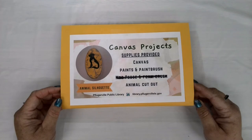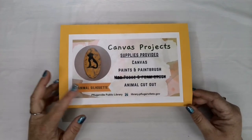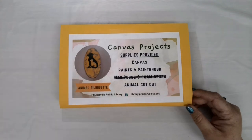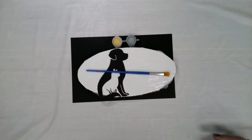Here we have our material supply kit coming in a folded over manila envelope. This month's project is an animal silhouette on canvas, so the items that you are going to receive in your material supply kit are as follows.